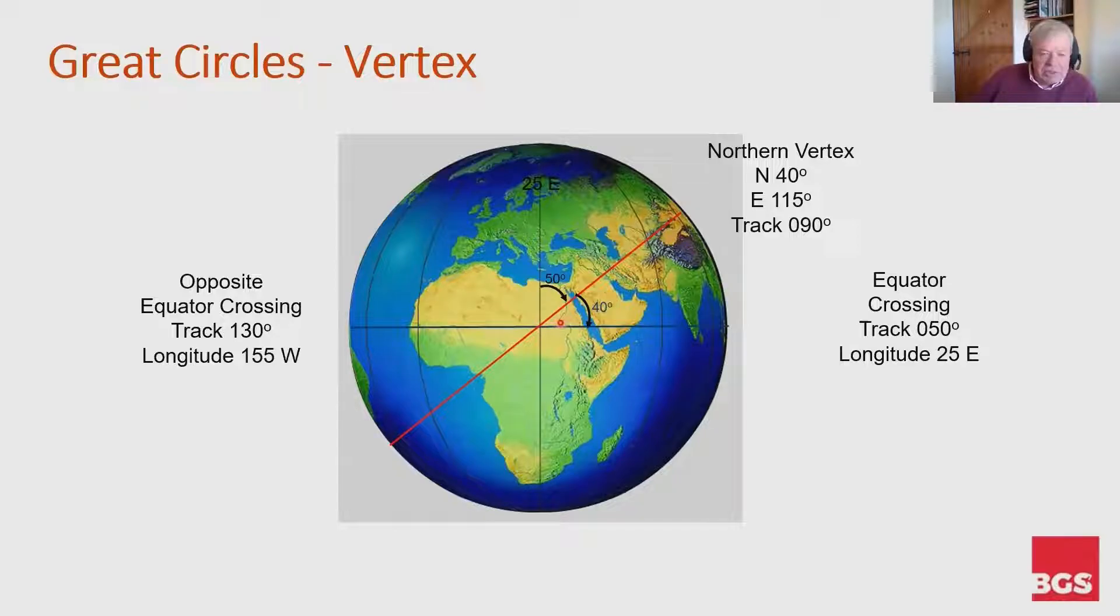Its track at this side was that 090 minus the latitude. The track at the other side will be that 090 plus the latitude. So its track will be 130 and its longitude will be 90 degrees further on from 115 east, which if you do the sums, comes out at 155 west. So that is where it crosses the equator at the opposite side of the earth.